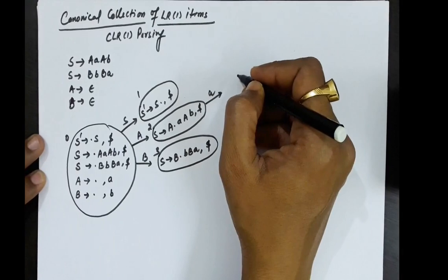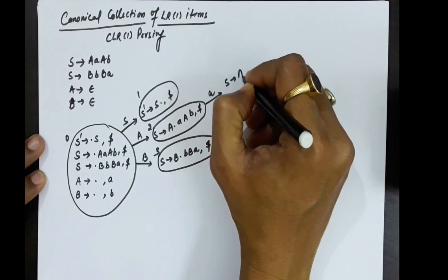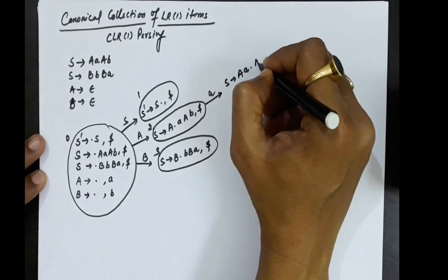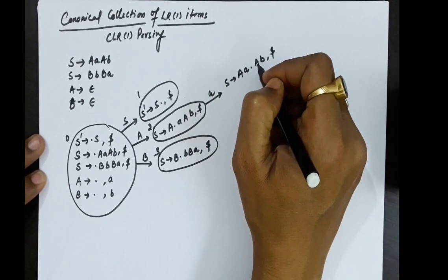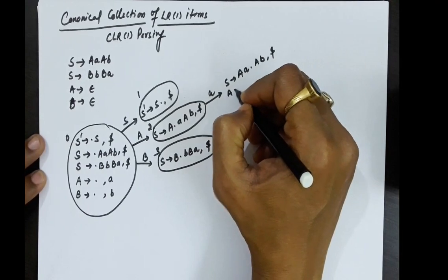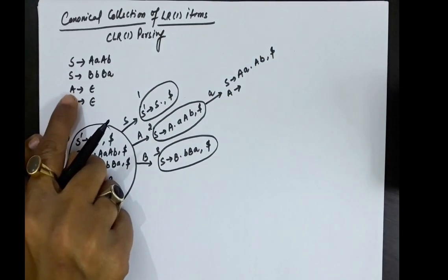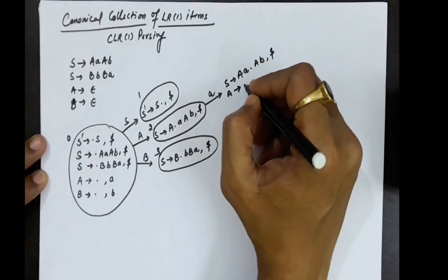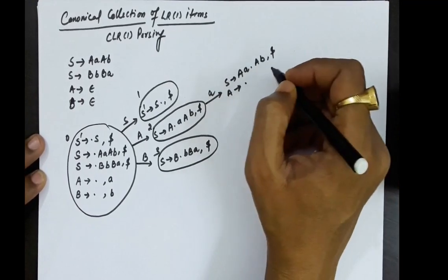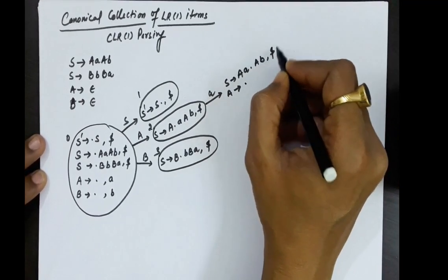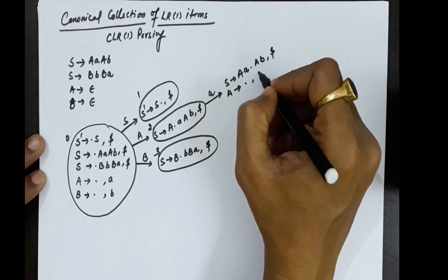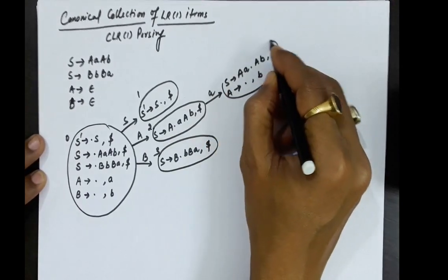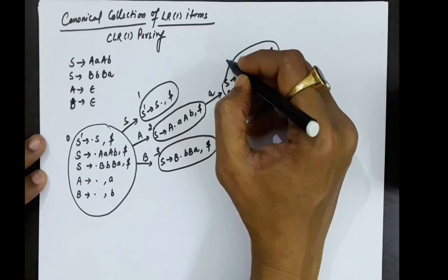From state 2, on transition with small a, we get item 4: S produces capital A small a dot capital A small b with dollar as lookahead. Since capital A appears after the dot, we include all productions starting with A. A produces epsilon, so A produces dot, and the lookahead is first of small b and dollar — which is small b. So this is state number 4.